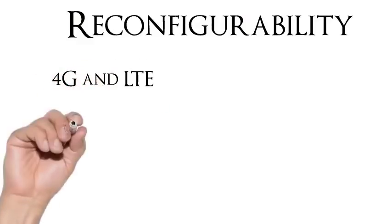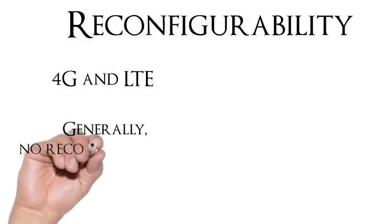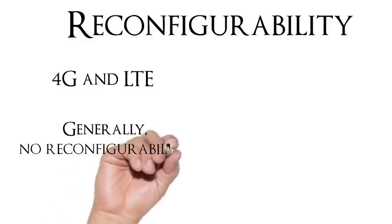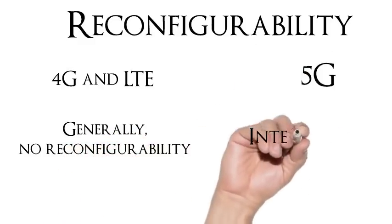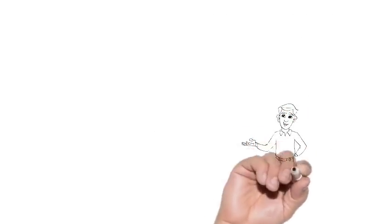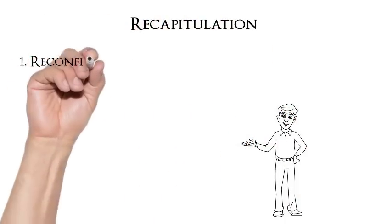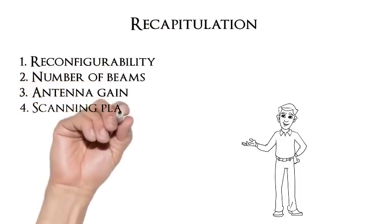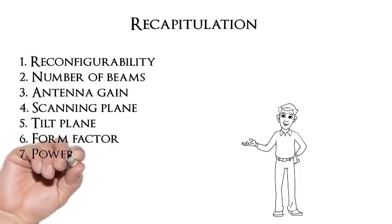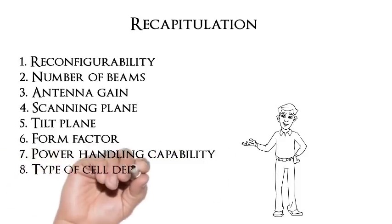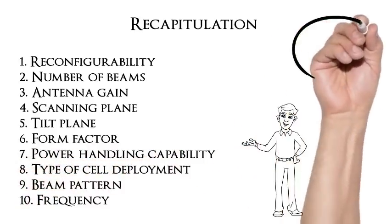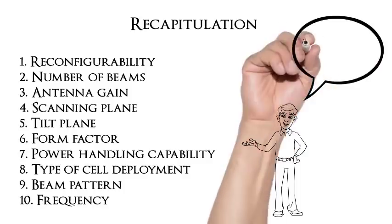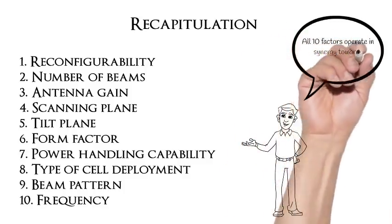And finally, down to number 1 — the most important requirement of 5G: namely, the reconfigurability required in 5G antennas. For 4G and LTE, there is generally no reconfigurability involved in the antennas. But for 5G, reconfigurability becomes an integral part of the 5G antennas. And finally, here is a recapitulation of the 10 factors necessary for the design of 5G antennas. It goes without saying that all of these 10 factors operate in synergy towards 5G antenna realization.